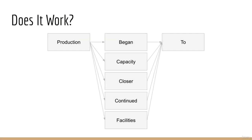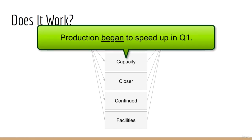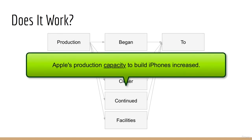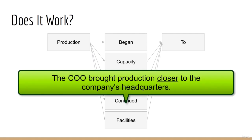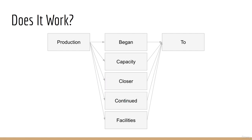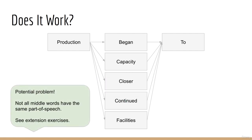Now it's probably a good idea to make sure this approach even makes sense. Consider the context words 'production' and 'to'. Some actual middle words from the dataset include: began, capacity, closer, continued, and facilities. You can imagine how all of these could be used in a sentence: 'Production began to speed up in Q1,' 'Apple's production capacity to build iPhones increased,' or 'The COO brought production closer to the company's headquarters.' Note that there is one potential issue — not all of these middle words are the same part of speech. Sometimes it's a noun, other times a verb, other times an adjective. So it's very possible you'll encounter a weird-looking result if you replace a verb with a noun.